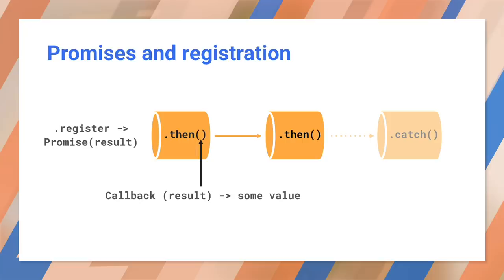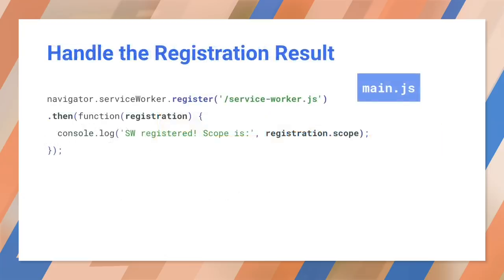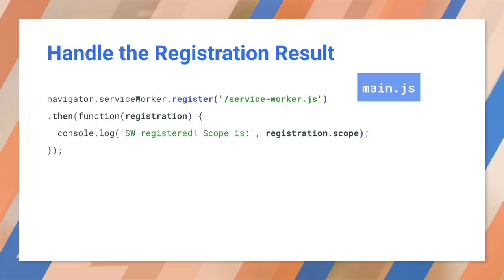In this case, register returns a promise. When the promise resolves, the result is passed into the next function — the one we registered using .then. The code looks like this: we call register, call .then on the promise, and collect the registration. We're then using the registration to print out the scope.